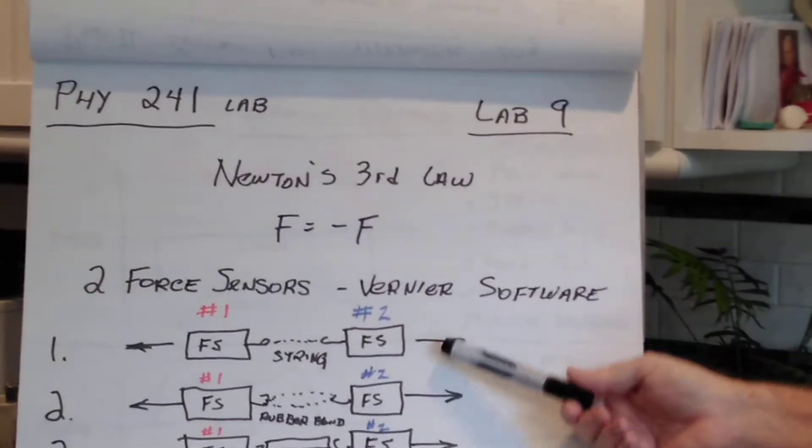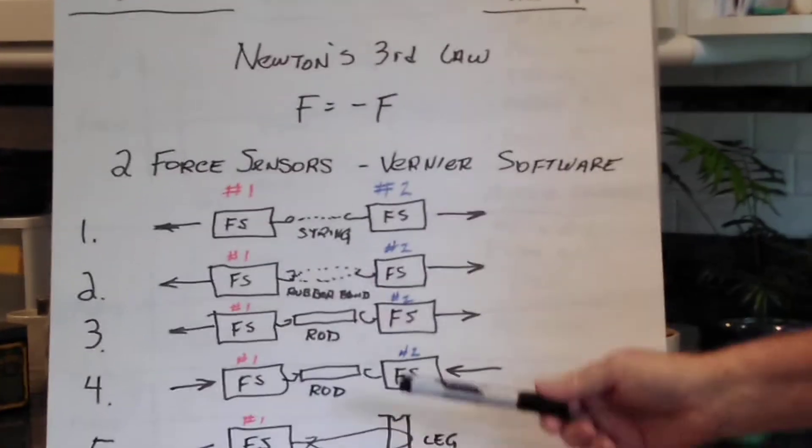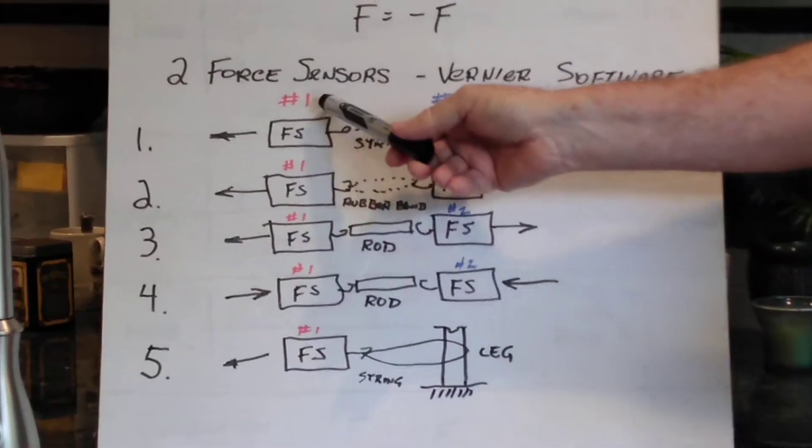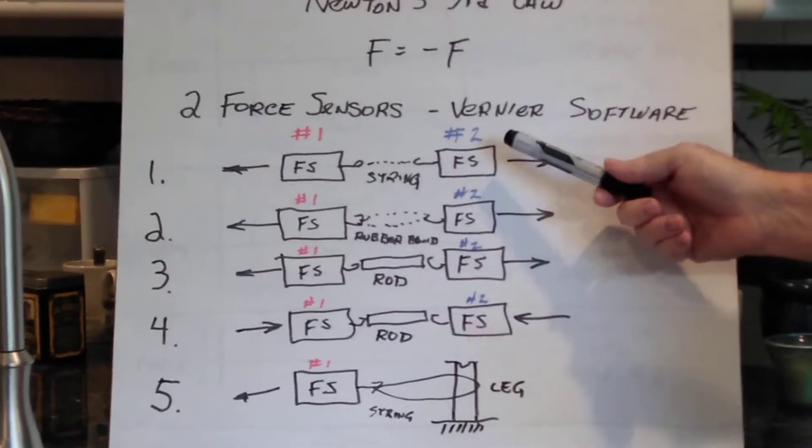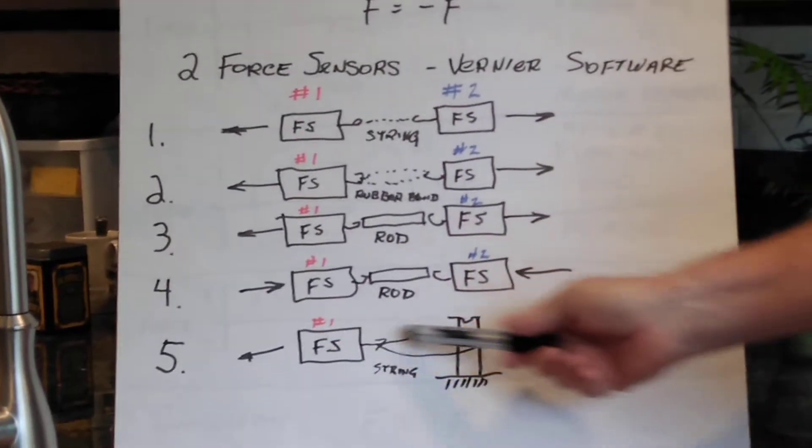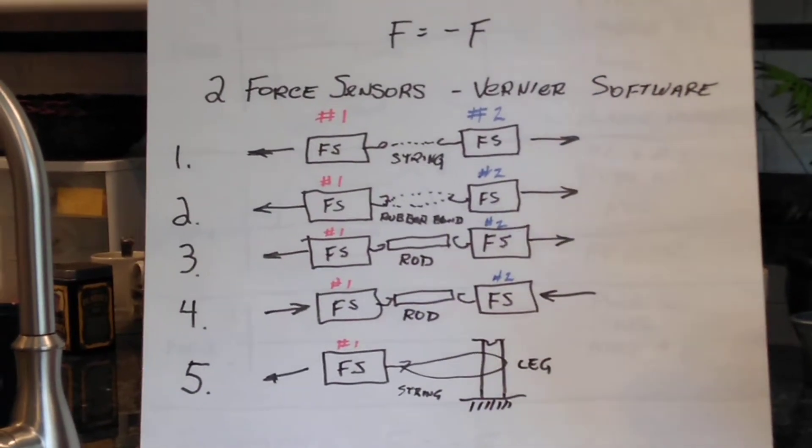We have five scenarios in which we're going to use the force sensors. The one force sensor we're labeling as number 1, and the one to the right we're labeling as number 2 throughout. In the fifth scenario we'll only be using one force sensor.